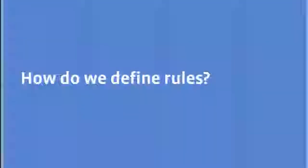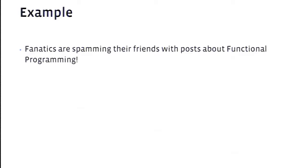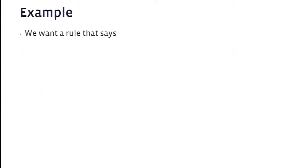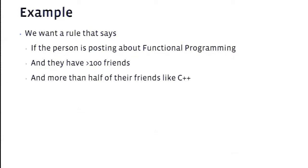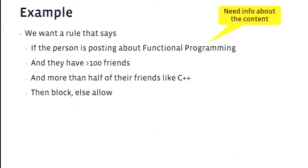How do we define these rules? I'll give a concrete example with a fictitious form of spamming. Let's imagine functional programming fanatics spamming their friends with posts about functional programming. We make a rule: if a person is posting about functional programming, and they have more than 100 friends — which is suspicious — and more than half their friends like C++, then we block it, else allow it.